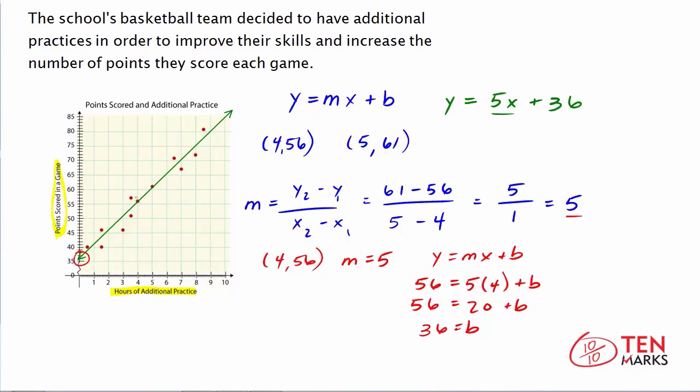So let's just look at those two points we talked about. So here's (4,56), and here's (5,61). (5,61) right here, (4,56) right here. Now the span here, the run is 1, because it goes from hour 4 to hour 5. And it goes up from 56 to 61, which is about 5.